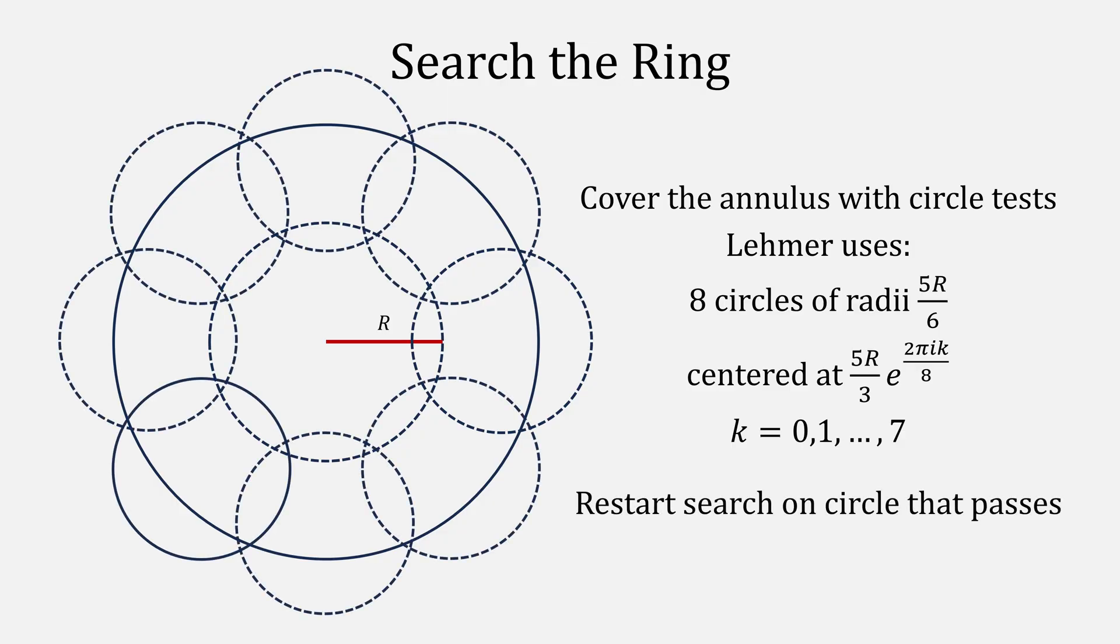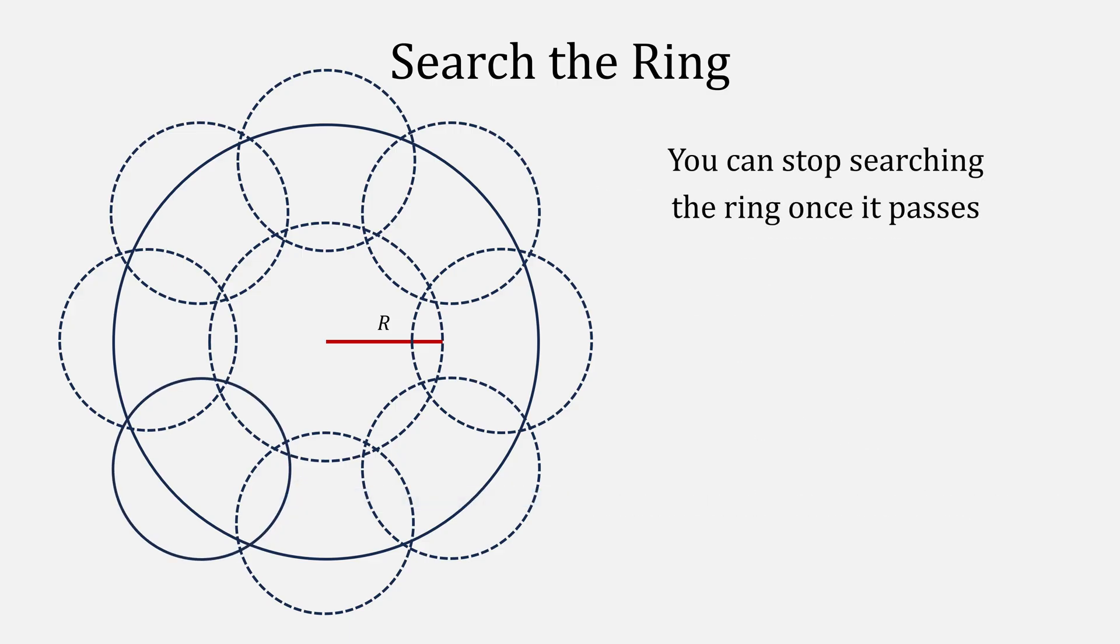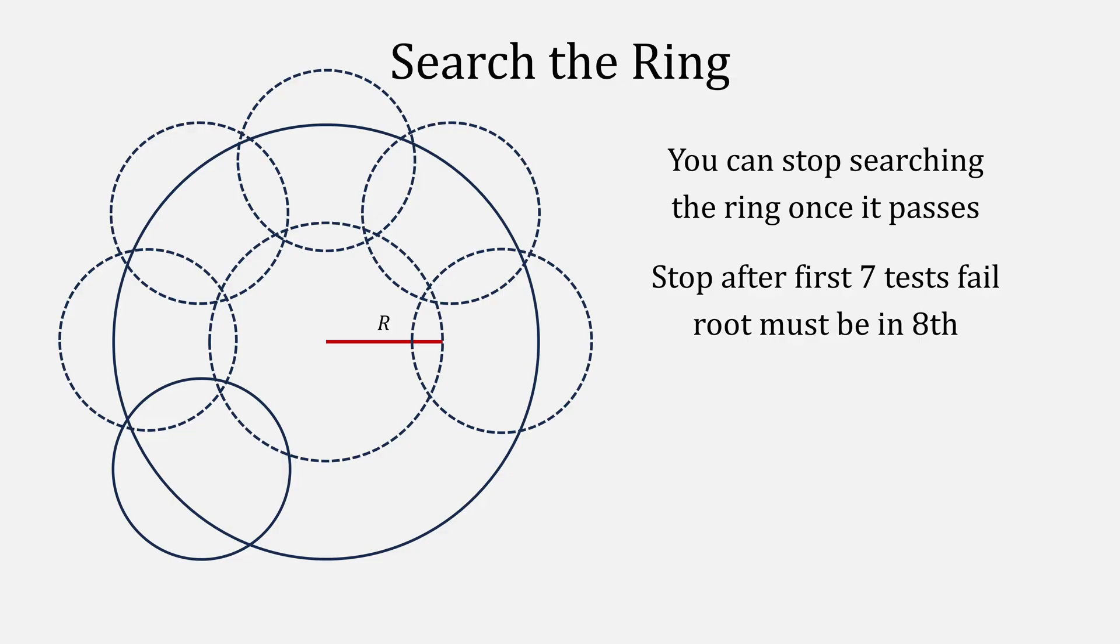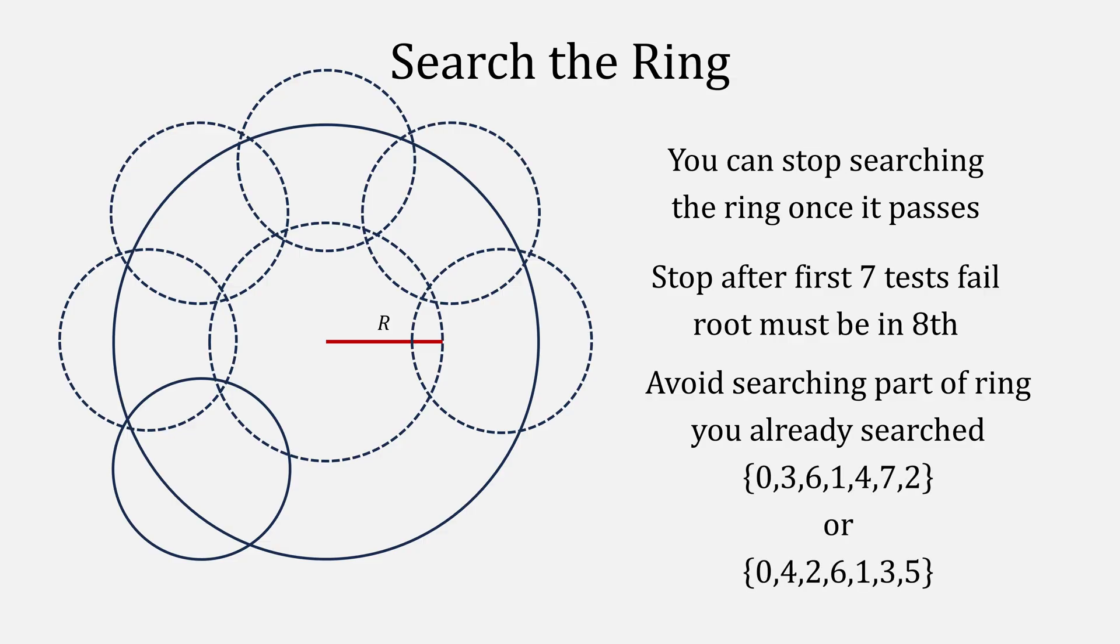And then restart our search on the circle that passed the test. You can stop searching once you found a circle that passes the test. In this case, we didn't need to do those last two tests. The other thing to consider is that you can actually stop testing after you have seven failed tests, because the eighth circle must contain the root. You also should avoid searching part of the ring that you've already searched.